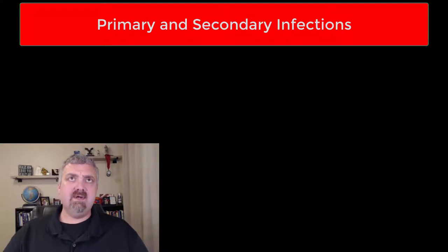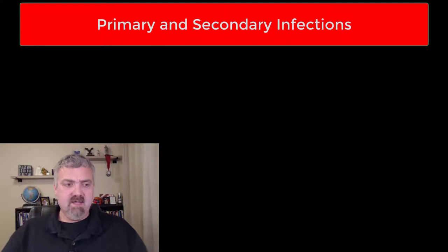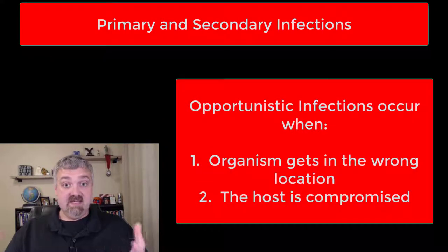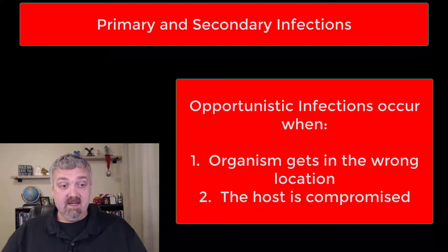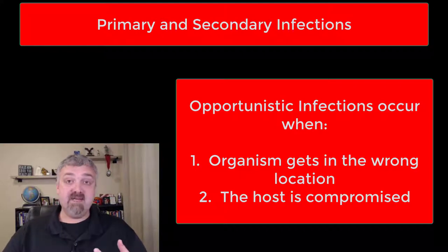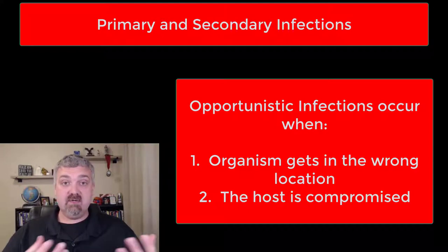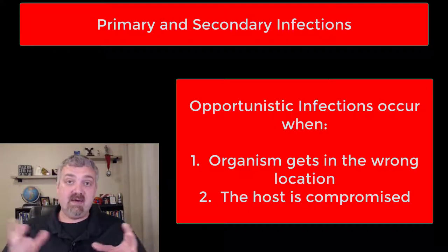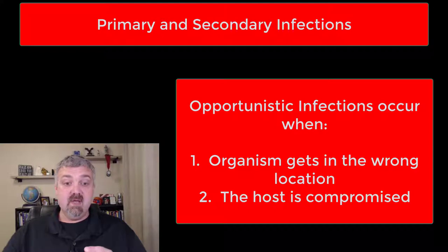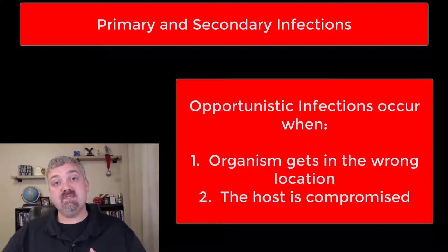Let's talk about what an opportunistic infection is and when they become a problem. An opportunistic infection is a type of secondary infection that occurs for one of two reasons. They occur when a pathogen gets in the wrong location — like with a burn or a surgery — which allows microbes to get into the wrong location, leading to one of these opportunistic infections.